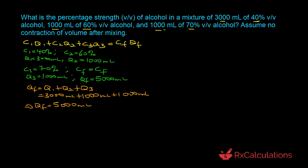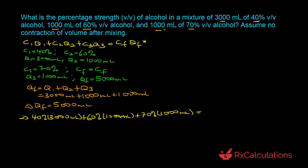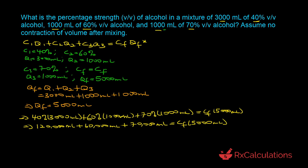From our equation there are eight terms, and we now know seven of them, so we can substitute all seven into the equation and solve for the unknown — the final concentration. That gives us: 40% × 3000 mL + 60% × 1000 mL + 70% × 1000 mL = Cf × 5000 mL. Simplifying: 120,000 + 60,000 + 70,000 = Cf × 5000. Note that the units are milliliters-percent; we'll add the percent sign to the final answer.